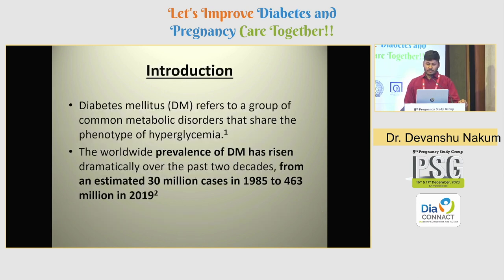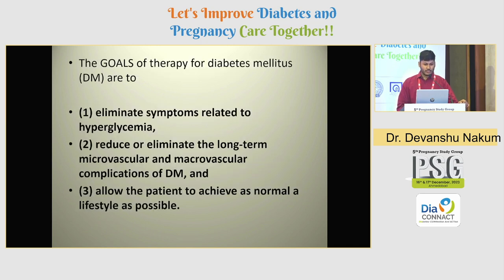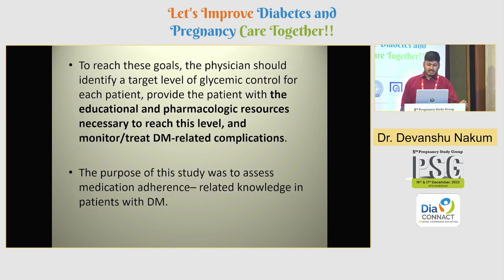Diabetes is a group of common metabolic disorders with a phenotype of hyperglycemia. The prevalence of diabetes has risen from an estimated 30 million cases in 1985 to 463 million cases in 2019. The goals of therapy include three major goals: eliminate symptoms related to hyperglycemia, reduce or eliminate long-term microvascular and macrovascular complications of diabetes, and allow the patient to achieve as normal a lifestyle as possible.